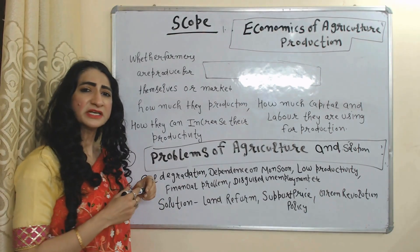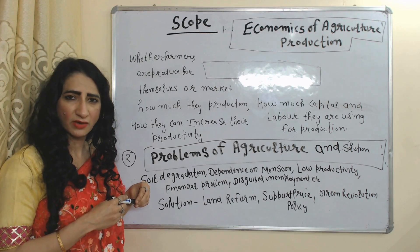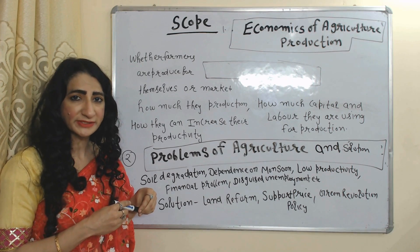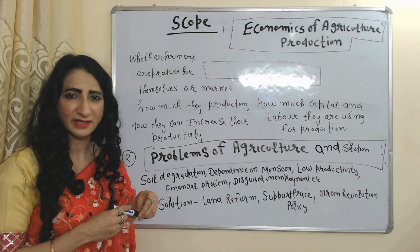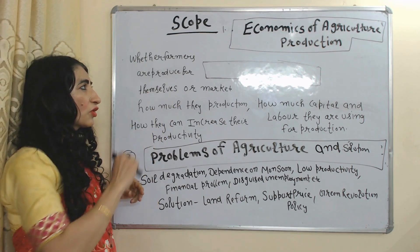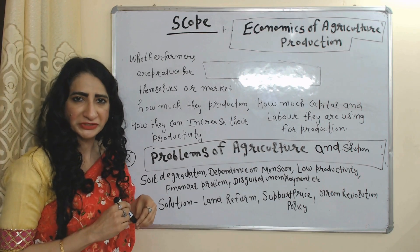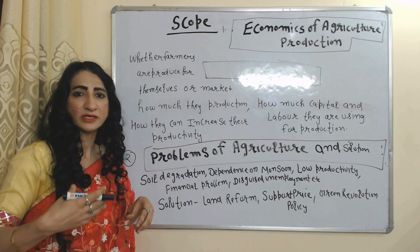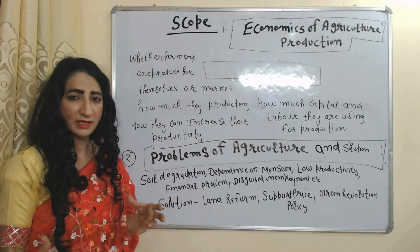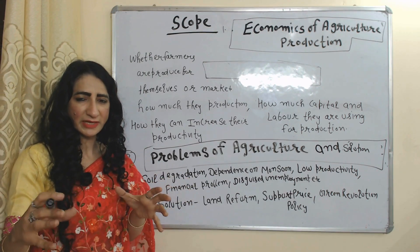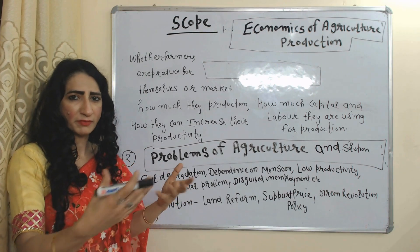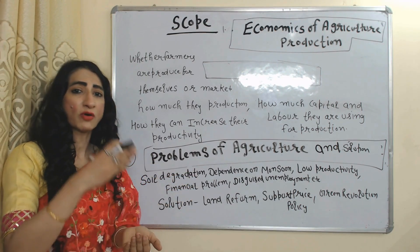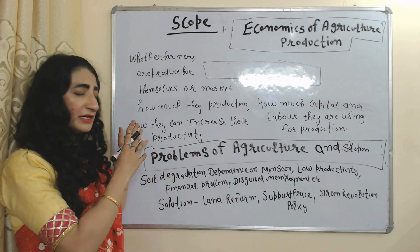Now we will see the scope of agricultural economics — meaning what topics we study in agricultural economics. The first scope is the economics of agricultural production. We study the production of the agriculture sector: whether farmers produce for themselves or for the market, how much they produce, how much capital and labor they use, and how they can increase their productivity.